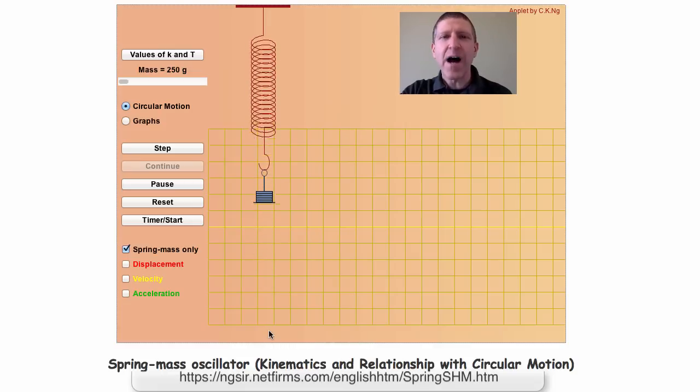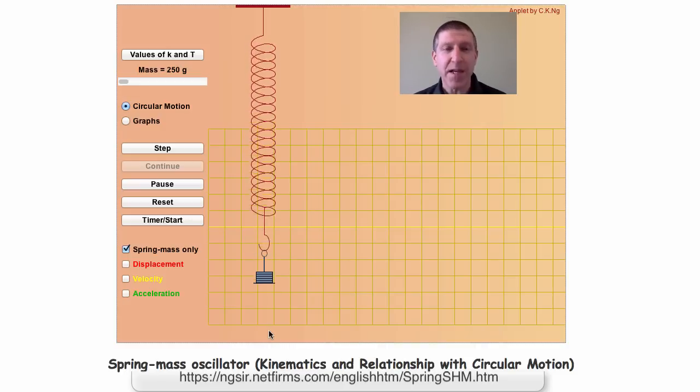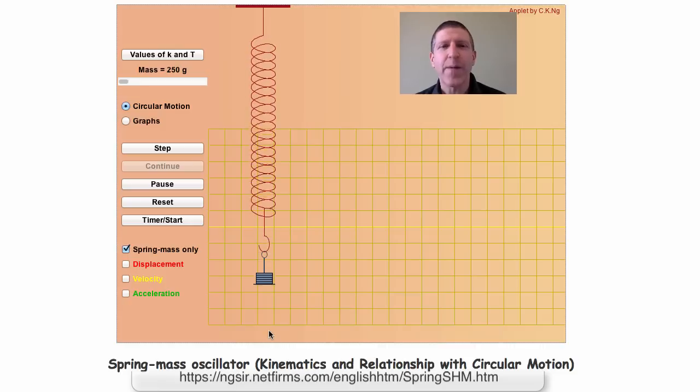So we have a situation here that the force is in the opposite direction of the displacement. And in fact, because the equation of Hooke's law is F equals negative kx, the force is oppositely directed and proportional to the displacement. So this is our perfect situation to have simple harmonic motion.